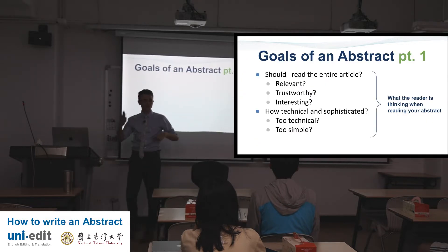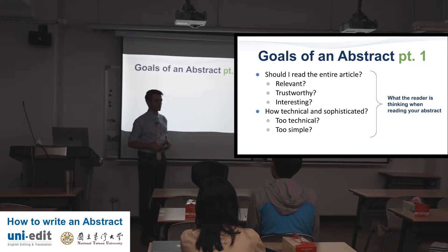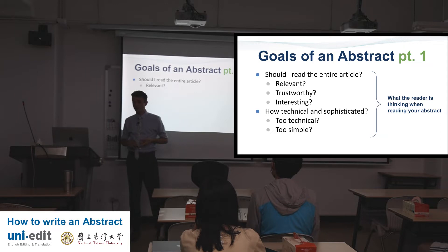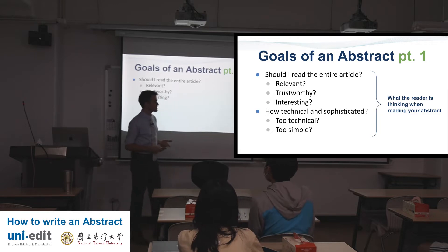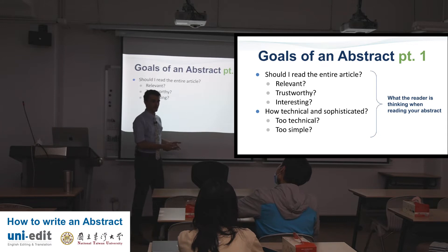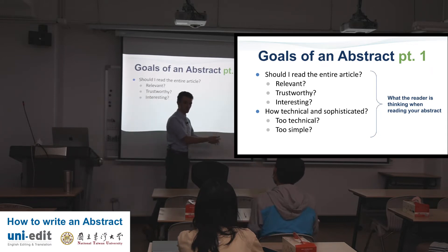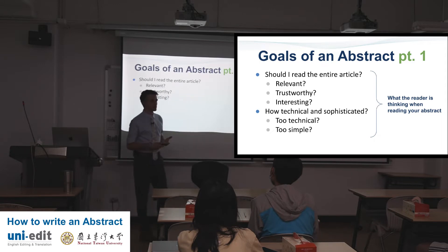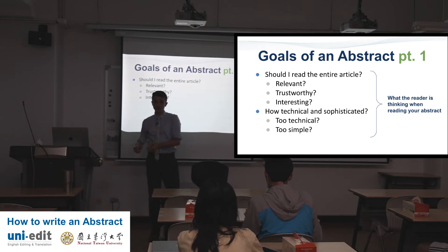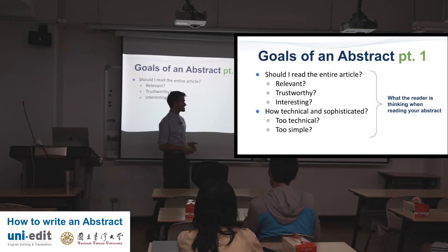Goals of an abstract, part one. You're going to ask yourself: should I read the entire article? Is it relevant? Is it trustworthy? Is it interesting? When I say trustworthy, that means if it's well written, you trust the author. If you don't understand the abstract, you don't trust the author. So trustworthy means you're determining: should I read the entire article, or do I go find a new paper? If you don't understand the abstract, you're not going to understand the article.